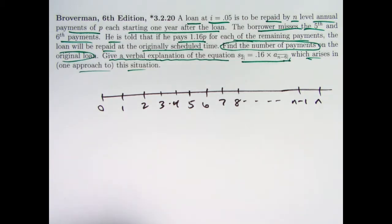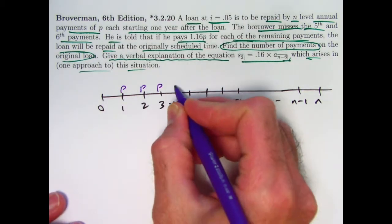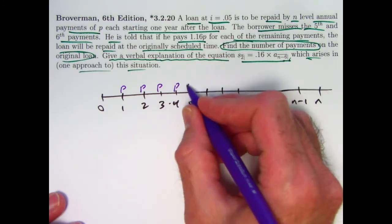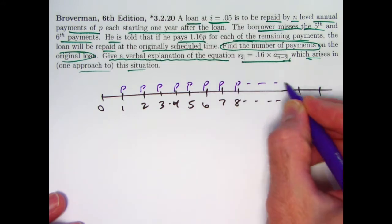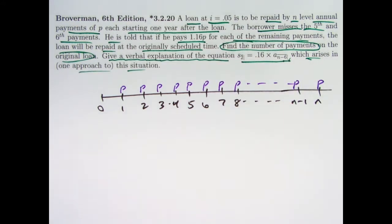Starting one year after the loan is made at time zero, so we have an annuity immediate. So the original schedule looks like this. Assuming the borrower pays P at all the scheduled times, you can write this visual representation of the payback scheme.